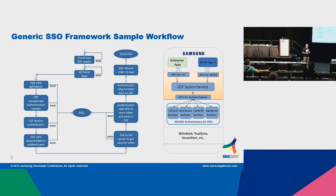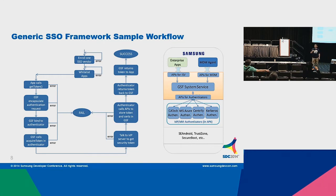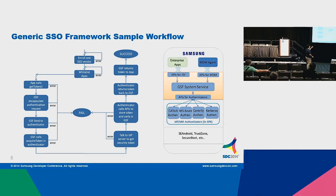Here is a sample workflow in a real usage scenario. The MDM enrolls the SSO and configures applications. When you launch an application, the first thing it does is call 'get token' from our framework. The framework talks to the IDP authenticator, which goes to the remote server and gets the token back. We return the token to the ISV app, and the app uses that token to exchange an OpenID or access token from its backend server.